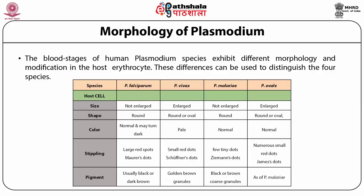Plasmodium ovale also exhibits Schüffner's dots with an enlarged erythrocyte, and it is difficult to distinguish from Plasmodium vivax infection. In general, Plasmodium ovale is a more compact parasite than Plasmodium vivax, most evident in the growing trophozoite stage, and merozoites are fewer per schizont. Elongated host erythrocytes are found in Plasmodium ovale; it does not modify the host erythrocyte except for a few elongated trophozoites which stretch along the erythrocyte to form a band-like structure. Schizonts typically have 8 to 10 merozoites, often arranged in a rosette pattern with a clump of pigment in the center.